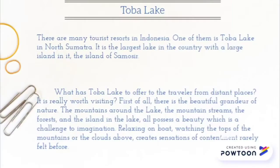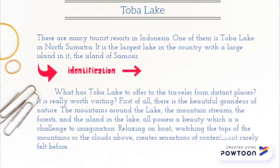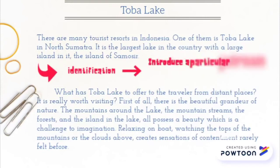I will show you the example of generic structure: Toba Lake. There are many tourist destinations in Indonesia. One of them is Toba Lake in North Sumatra. It is the largest lake in the country with a large island in the middle. Jadi, pada paragraf pertama itu adalah identification — dia memperkenalkan tempat.